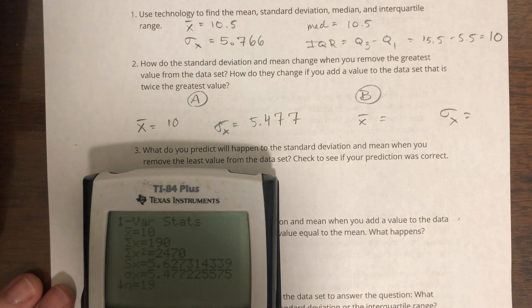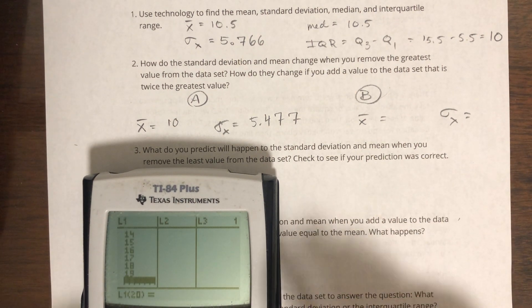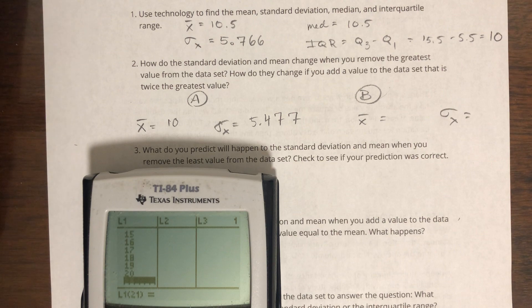Part B: what happens if you add something that is twice the greatest value to the data set? So I'm going to assume they mean keep 20 there and then additionally put in a 40.